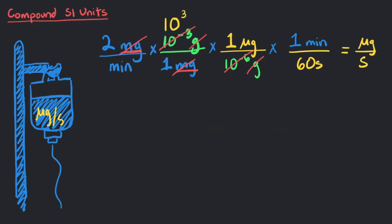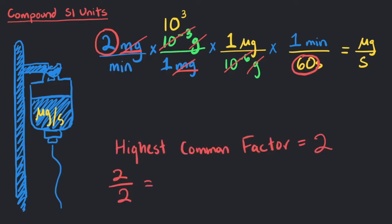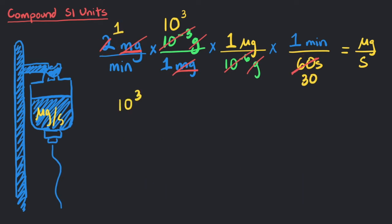Looking at the remaining numbers, we have 2 on top and 60 on the bottom. We can simplify these numbers like a fraction. The highest common factor is 2. So we can divide the 2 by 2 to get 1 and then divide the 60 by 2 to get 30.